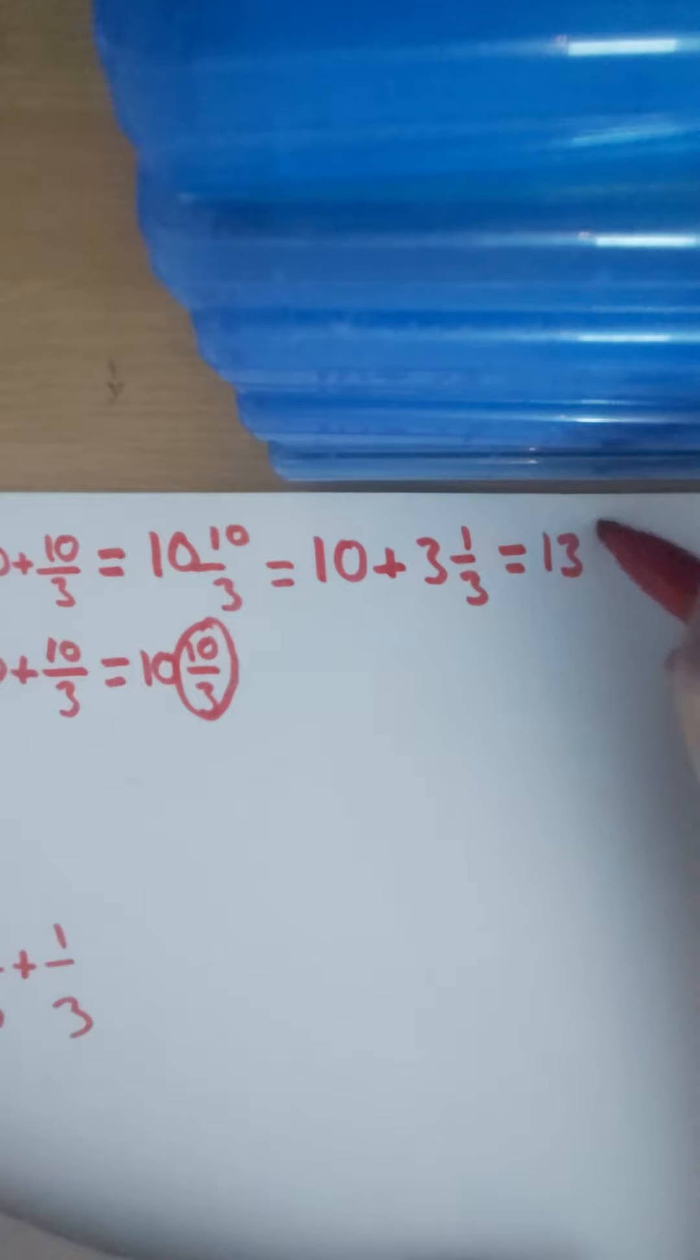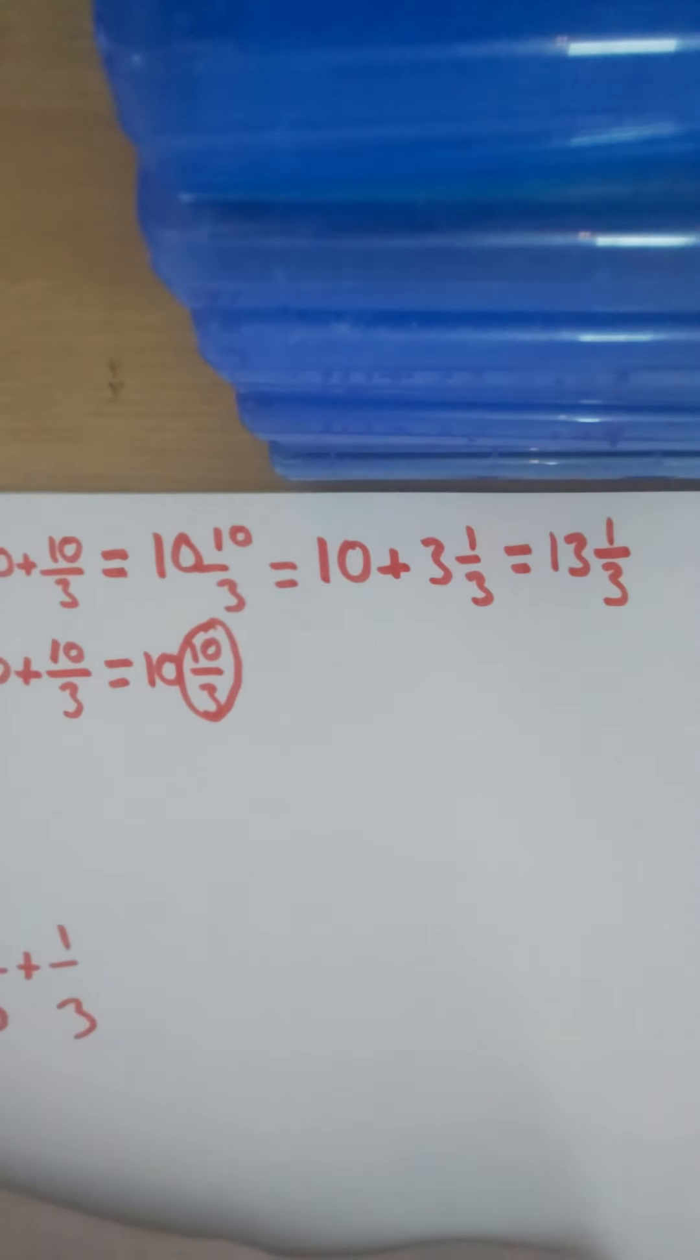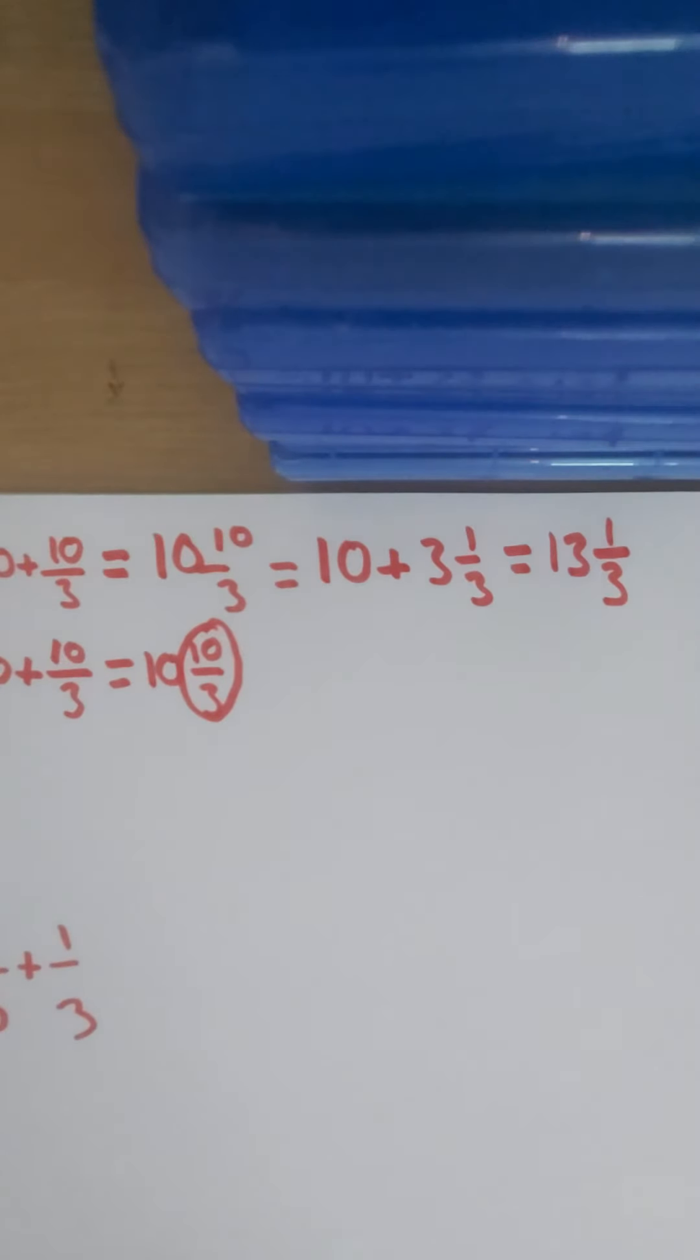So 10 add the 3 is 13, and then just the 1/3 left over. So 13 and 1/3. Any more questions you've got that you would like me to go through? I know that one was particularly complicated, but just watch the video back a few times and see how I practice doing it.